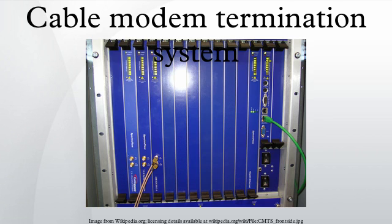A cable modem termination system, or CMTS, is a piece of equipment typically located in a cable company's headend or hub site, which is used to provide high-speed data services such as cable internet or voice-over internet protocol to cable subscribers. A CMTS provides many of the same functions provided by the DSL-AM in a DSL system.